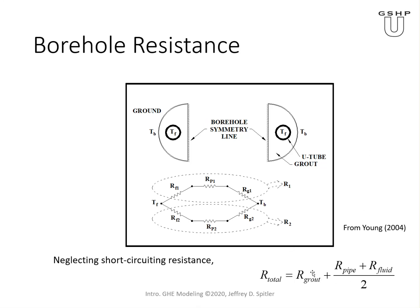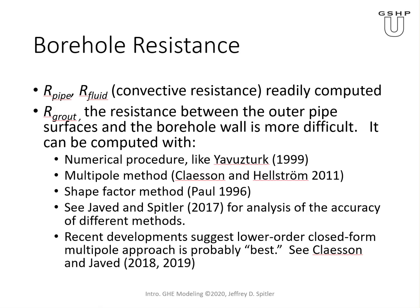This expression doesn't quite match this network exactly; if you connect the two grout paths as a single grout, then the expression matches the network. The resistance of the pipe and the convective resistance at the wall are easily computed if you know the convection coefficient — we usually use a correlation like the Dittus-Boelter correlation or similar for flow inside a pipe. The hard part is calculating the grout resistance, and we'll have a separate lecture on borehole resistance.